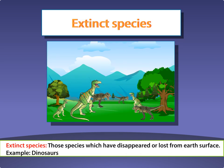Extinct species. Those species which have disappeared or are lost from the earth's surface are known as extinct species. Example: dinosaurs.